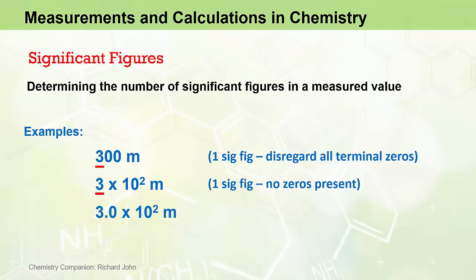In this case, 300 metres is represented in scientific notation as 3.0 × 10² metres. When measured values are in scientific notation, we count all digits in the coefficient, which here is 2. So this measurement has two significant figures, indicating more certainty compared to the measurements above.